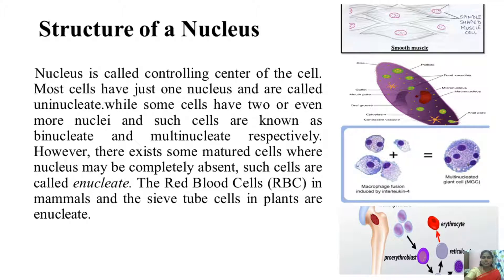Other cells are known as binucleate. For example, in the case of paramecium, we can see the micronucleus and macronucleus. Some cells are multinucleate. However, there exist some mature cells where the nucleus may be completely absent, as we can see in the case of RBC. Such cells are called enucleate.